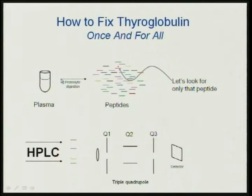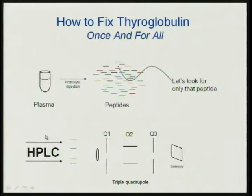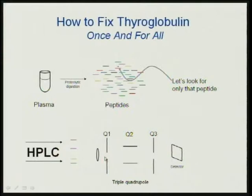How would we do this? If we take plasma and proteolytically digest it with trypsin into peptides, we can use the mass spectrometer to look for specifically one peptide of interest. We load all those peptides onto the HPLC and they elute off, partially resolved from one another. Even if peptides elute at exactly the same time, we can use a triple quadrupole mass spectrometer to separate them. In the first quadrupole, we look for the mass-to-charge ratio of the intact peptide. In the second quadrupole — the collision cell — we break that peptide into fragments. Then we use the third quadrupole to look for a specific fragment. The specificity is threefold: correct HPLC elution time, correct precursor mass in Q1, and correct fragment mass in Q3.